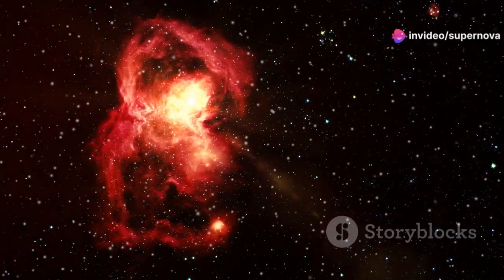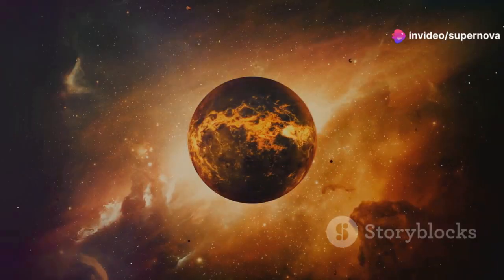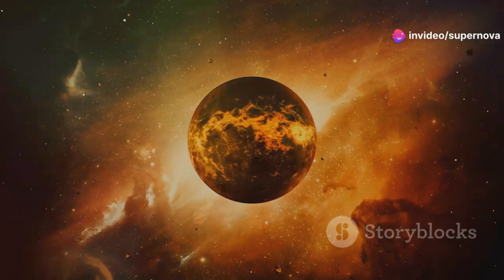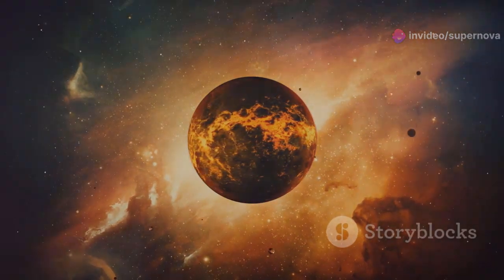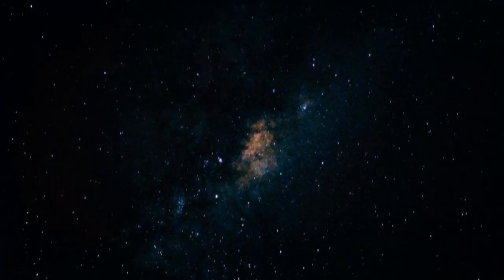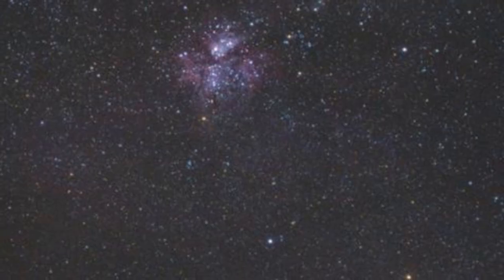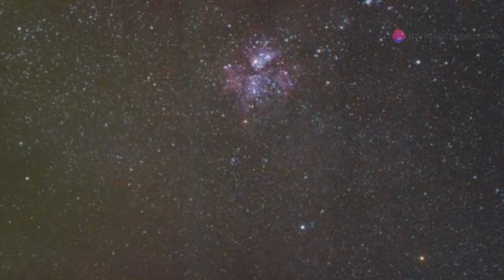Betelgeuse is a red supergiant, one of the largest stars we know. If it were placed in our solar system it would engulf all the inner planets, maybe even Jupiter. This massive star is relatively close to us, about 640 light-years away, making it a fascinating object for astronomers.